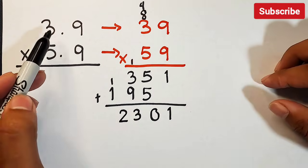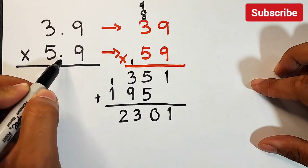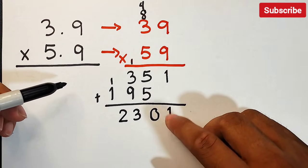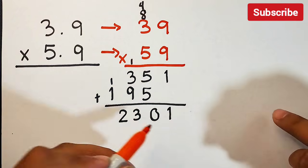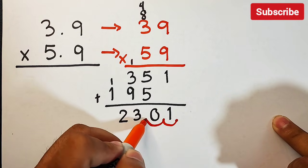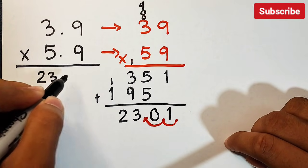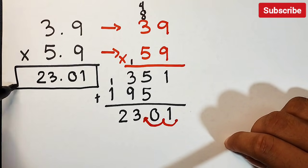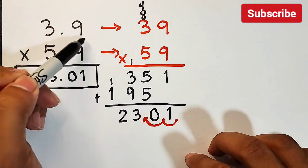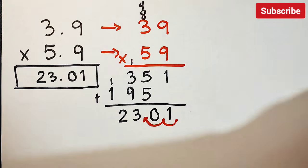To place the decimal, we count the decimal places: 3.9 has 1 decimal place and 5.9 has 1 decimal place, so 1 plus 1 equals 2 decimal places total. We move the decimal point 2 places from right to left in 2301, giving us a final answer of 23.01.